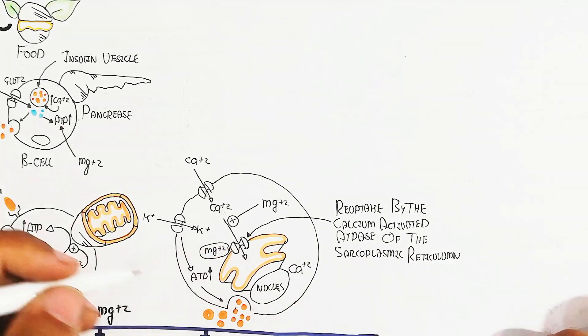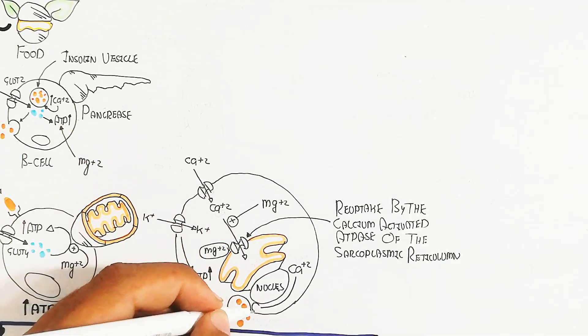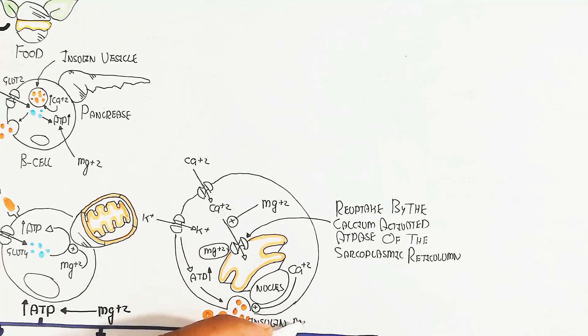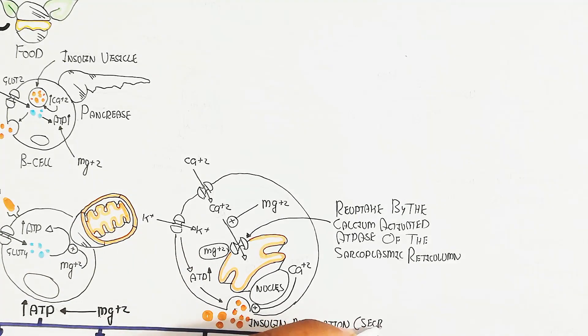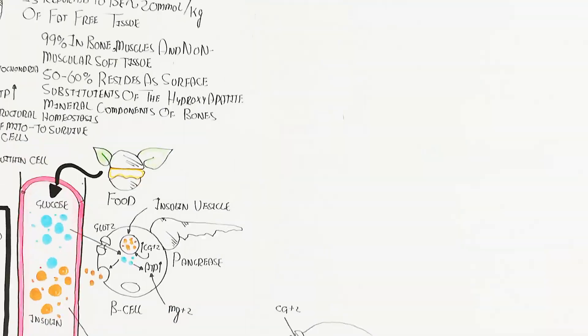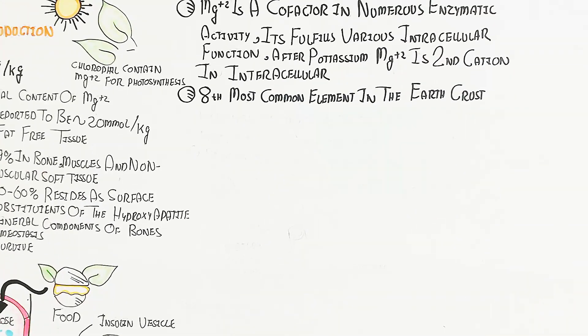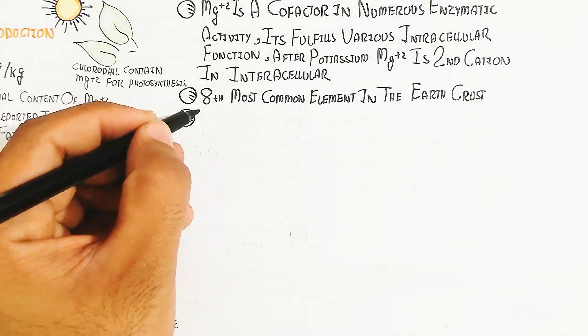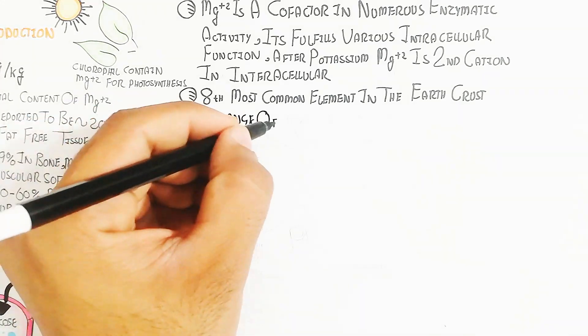After muscle relaxation, magnesium is important for calcium reuptake back into the endoplasmic reticulum. The reuptake by calcium-activated ATPase of the sarcoplasmic reticulum is very important for normal homeostasis, metabolism, muscle contraction, and content excretion.